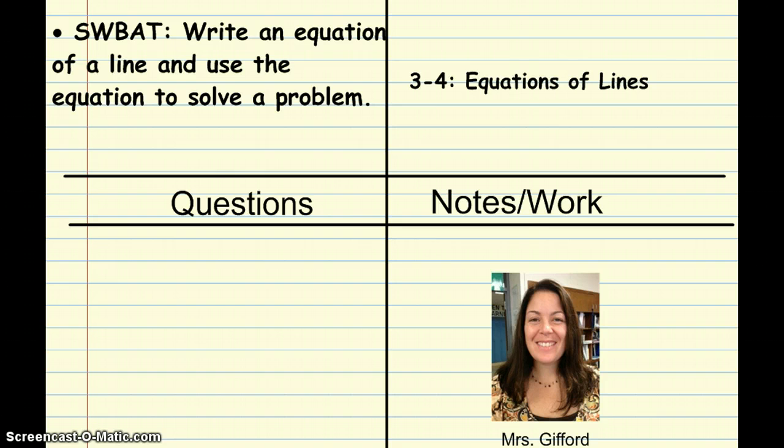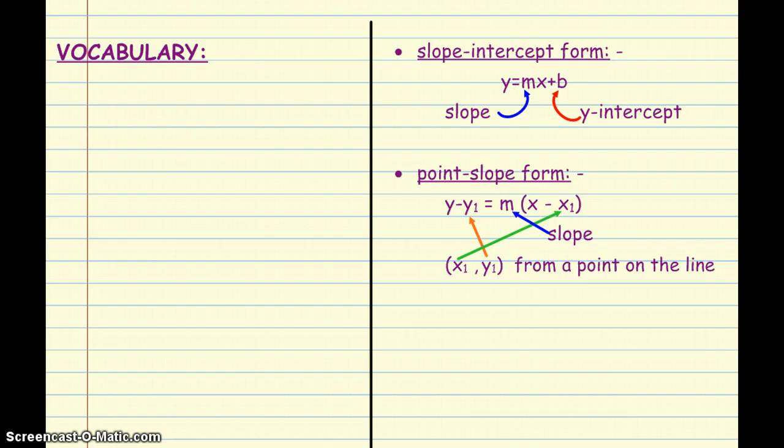Actually, most of this lesson is review from stuff that you did last year. So, two vocabulary terms, as a reminder, the first thing to talk about is slope-intercept form, y equals mx plus b, again the m is the slope and b is y-intercept.